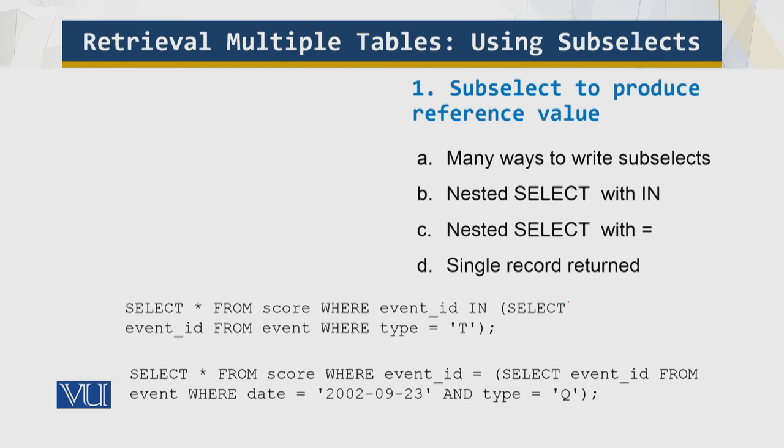The following is an example that looks up the IDs for event records corresponding to test T and uses them to select scores for these tests. There are many ways to write the subselects. SELECT * FROM score WHERE... this is one approach using the IN.